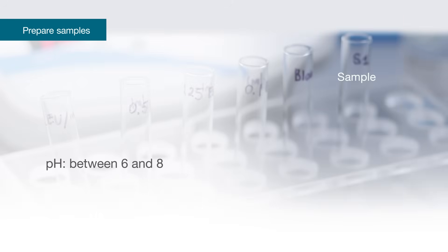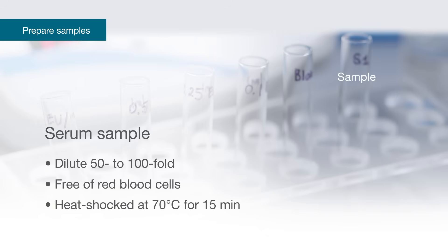Adjust the sample pH to be between 6 and 8 using endotoxin free acid or base as needed. If testing serum samples, dilute 50 to 100 fold to be compatible with the assay. The serum must be completely free of red blood cells and heat shocked at 70 degrees Celsius for 15 minutes.